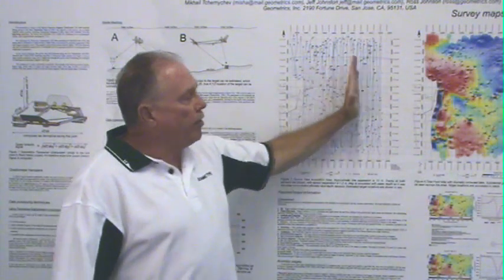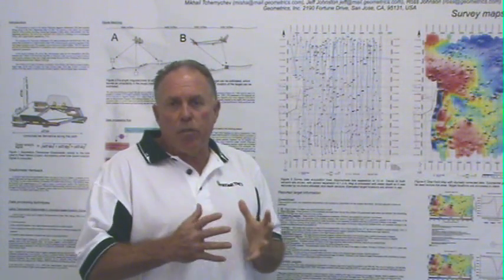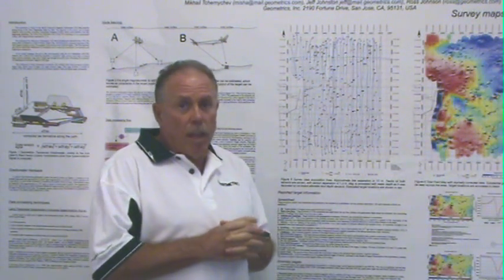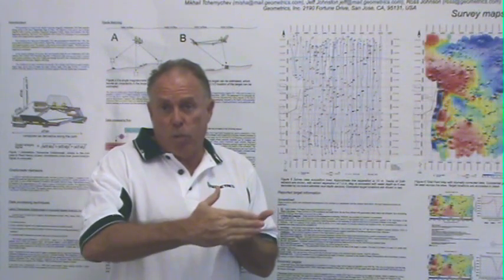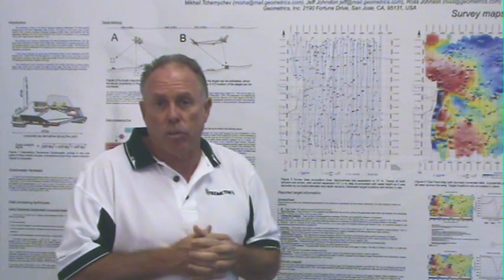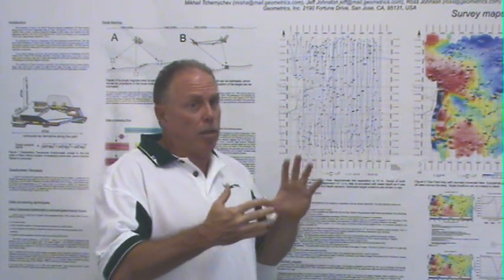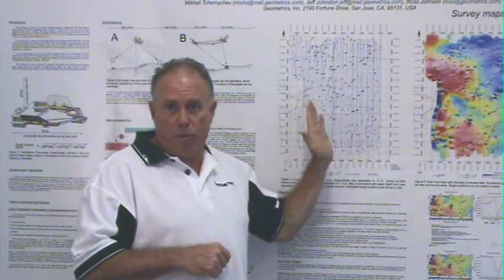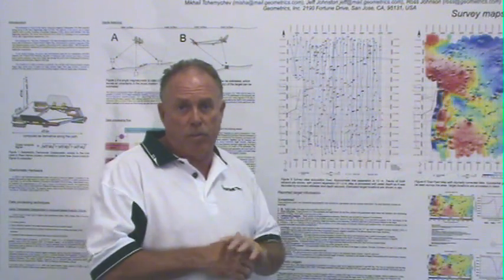Once we had acquired the data, there were three different processing paths that we performed. It's important for us to understand each one because each processing path gives us a result that helps us understand the nature of the target, the type of UXO, and the size and depth of its burial.